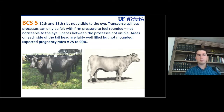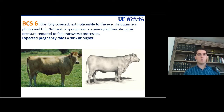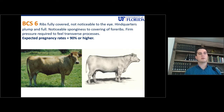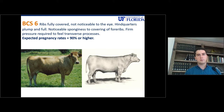If a cow calves on a body condition score of 6, you won't be able to see the ribs. The cow has a smoother appearance, and the tail head is full but not excessive yet — completely full, but without an excessive amount of fat. And if the cow calves on a body condition score of 6, the expected pregnancy rates will be somewhere around 90% or even higher.